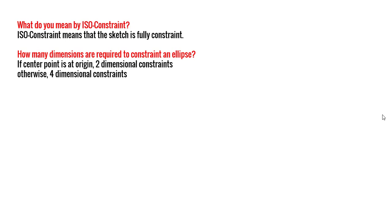When you go for an interview like this, you will not have the software available — you will sit one-on-one with the person and give answers. So you must have that level of visualization to explain things, representing that you are actually imagining the software and explaining to the interviewer. It will reflect that the candidate has deep knowledge of every possible aspect — creating the ellipse at origin, away from origin, on X-axis, on Y-axis — with dimensions changing accordingly.